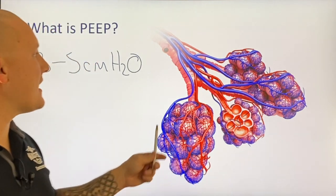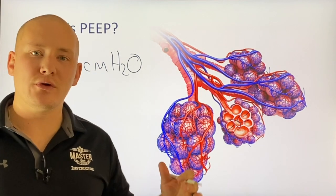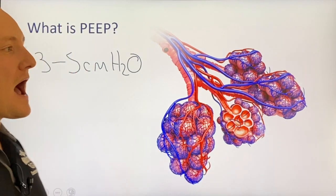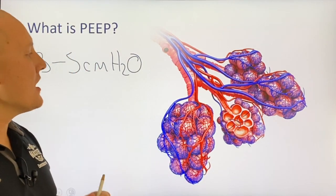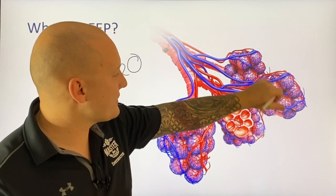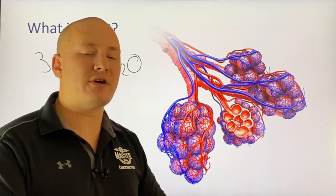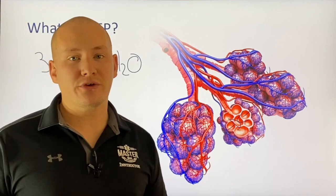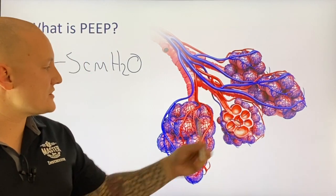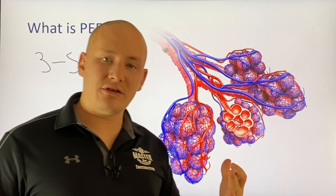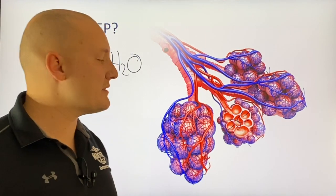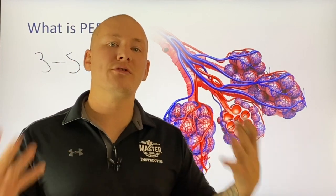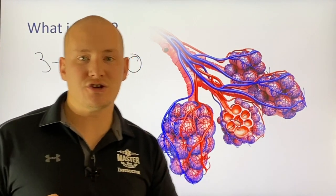The bottom line is that the PEEP valve improves alveolar recruitment by improving airway pressures, resulting in less alveolar collapse. We may even be able to re-recruit already collapsed alveoli and improve their ventilatory status. We're also going to see a decrease in fluid retention — in patients with pulmonary edema, increasing PEEP and introducing the PEEP valve may decrease the amount of fluid in the alveoli, giving us more surface area for oxygenation.